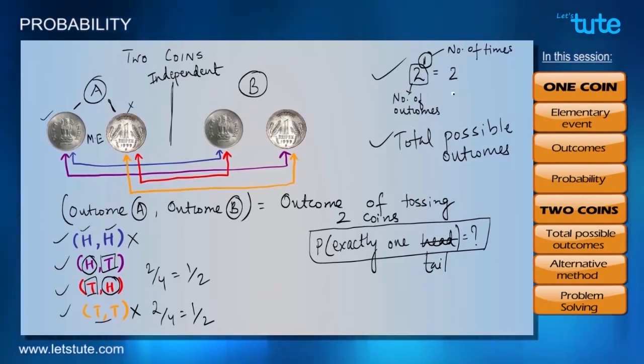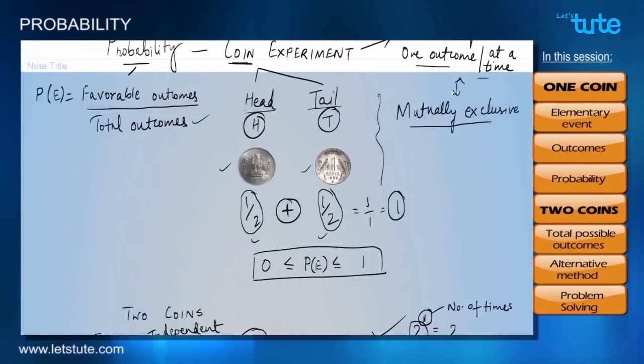And we certainly cannot take 4th outcome because again we have 2 tails in it. In the same way, we can work out probabilities associated with 3 coins and we can play around all the possible combinations and figure out the probabilities associated with them. Now, let's go ahead and make a checklist of what we learned in this session.